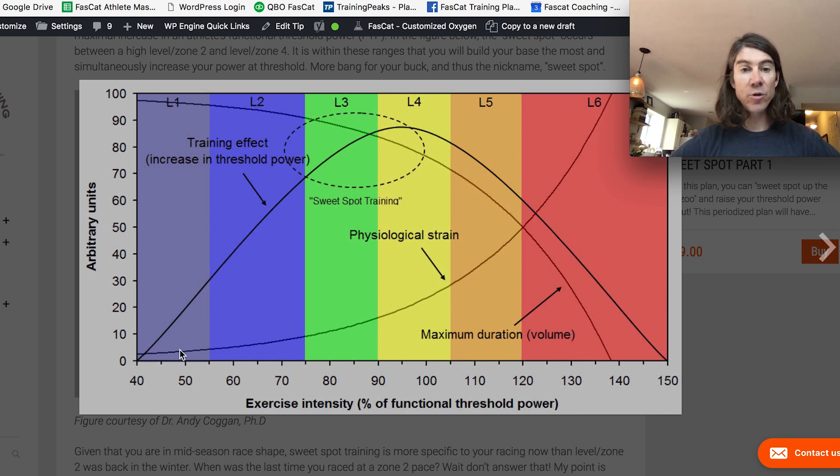And as you train, zone two does not incur that much physiological strain, nor does sweet spot. But once you start getting up into the full gas, two by 20s, the threshold interval workouts, you begin to incur a lot of physiological strain.